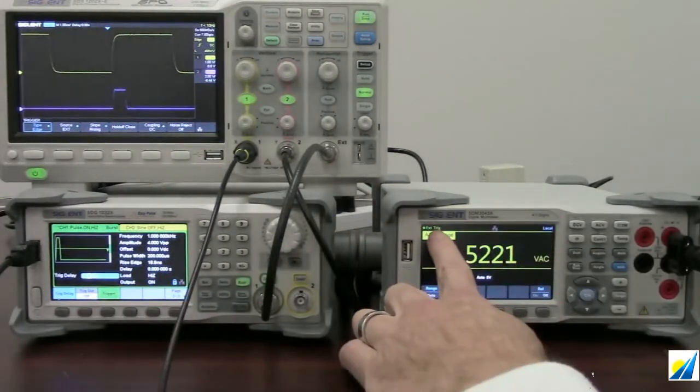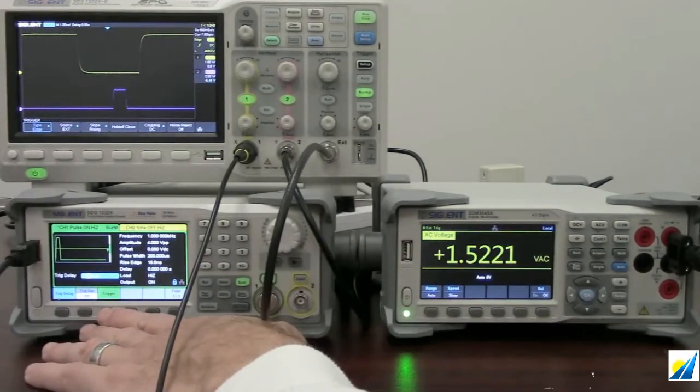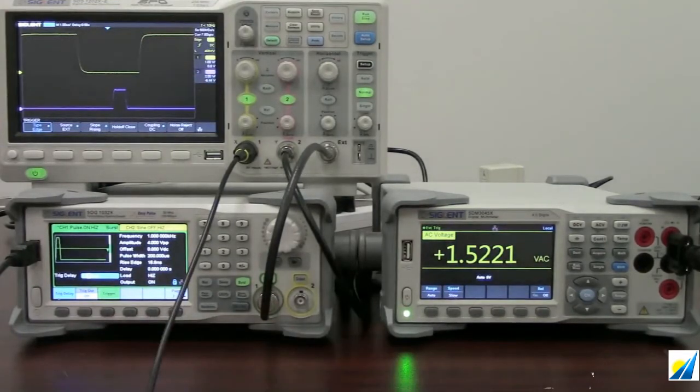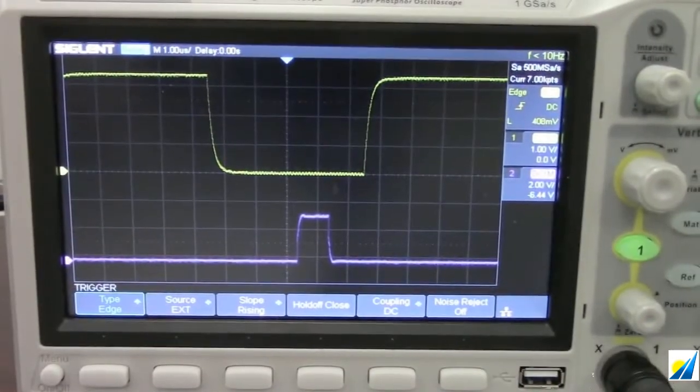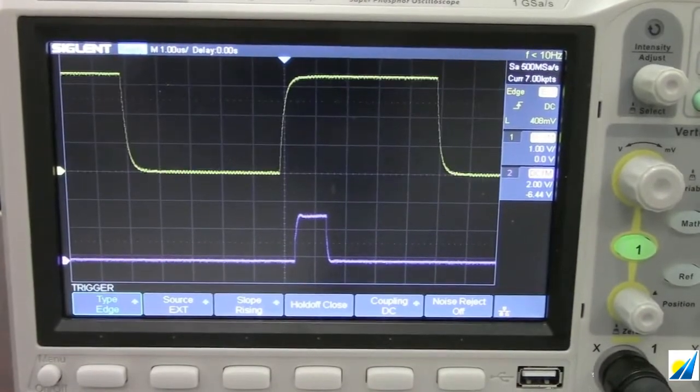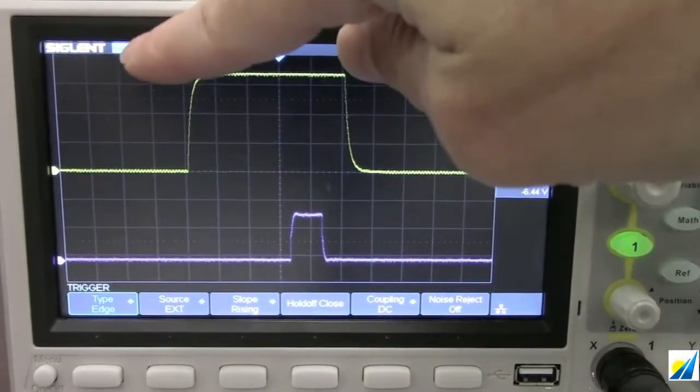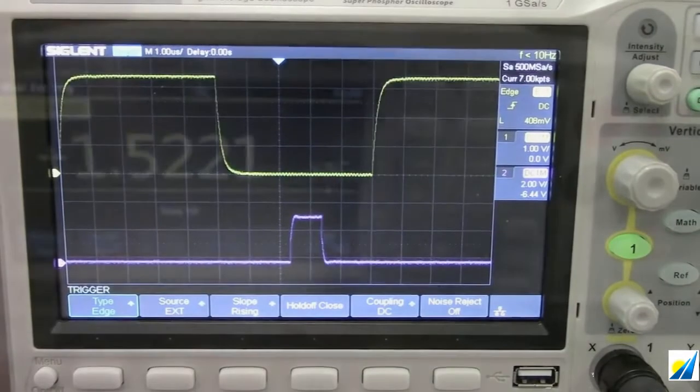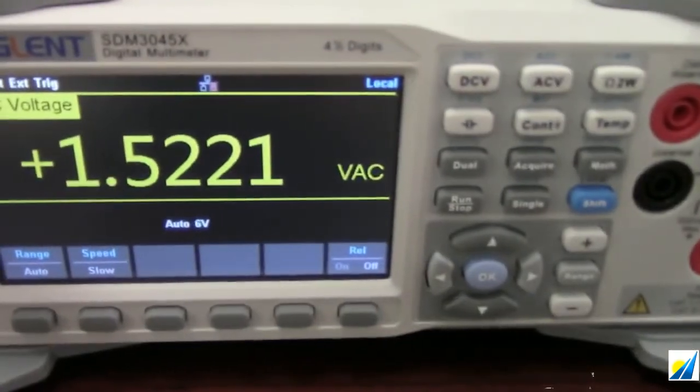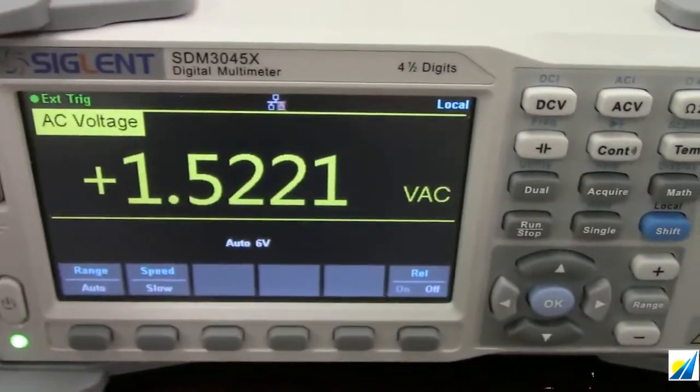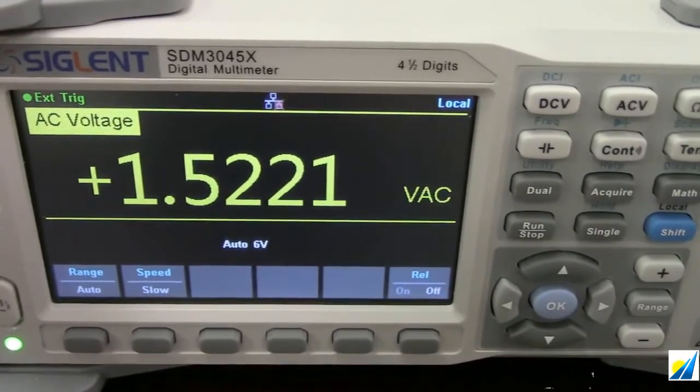But I'll perform that again. Pressing the trigger button, you'll see we actually get external trigger here. And you can see that indicated by the trigger indication up at the top of the screen here on the scope. And as we go over to the multimeter, you can also see that we are getting its external trigger. So it is also triggering and making a measurement.